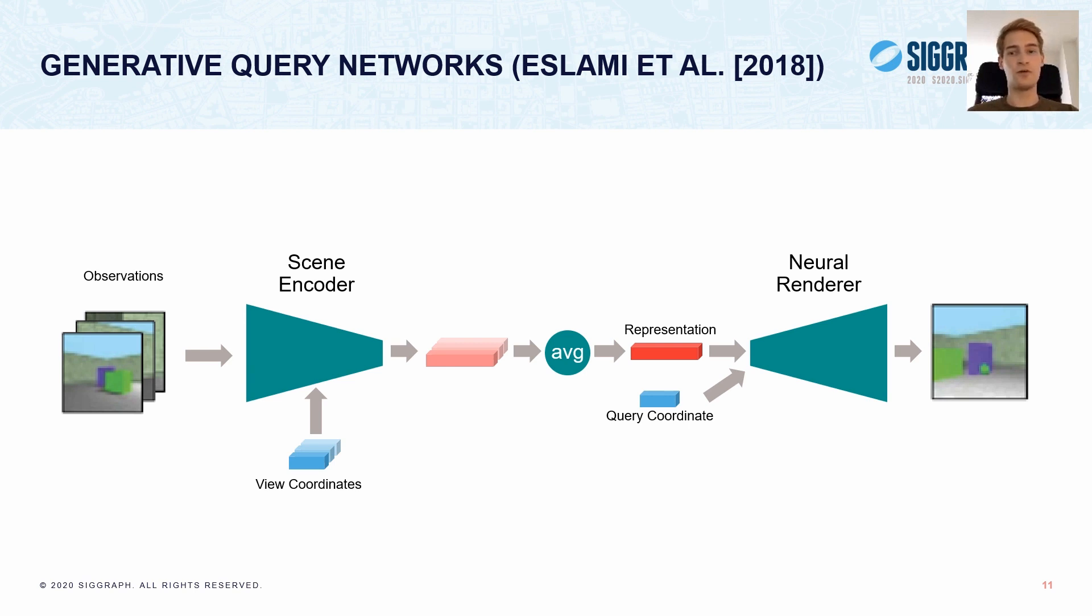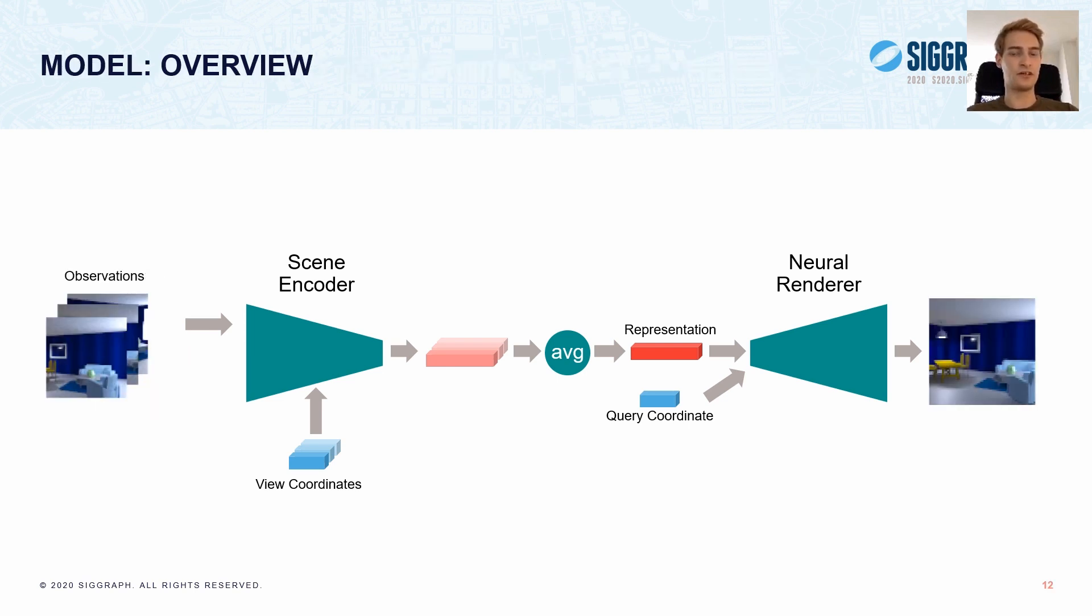One major problem with their approach, however, is that the representation is a black box that is difficult to analyze and to control. Another notable disadvantage is that the training time is extremely high, with networks taking even weeks to train just to produce these 64x64 images. However, their encoder network is actually extremely lightweight in comparison to the rendering network.